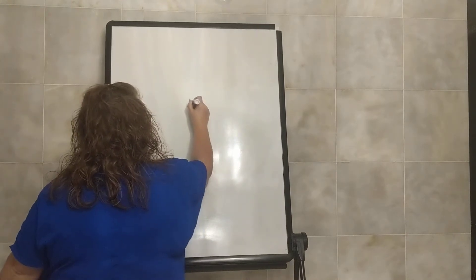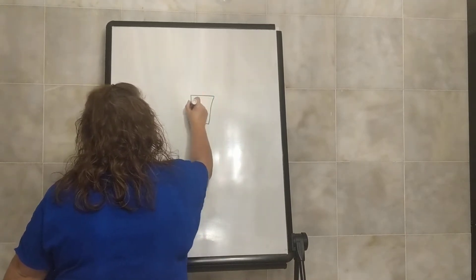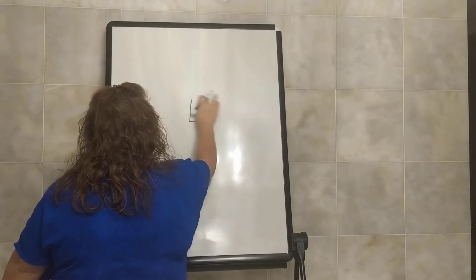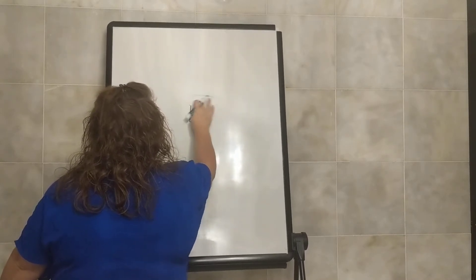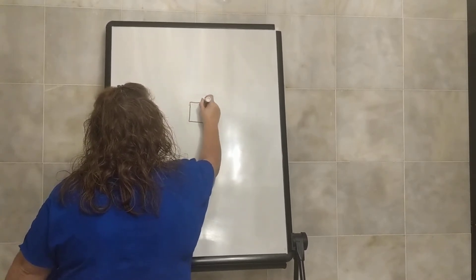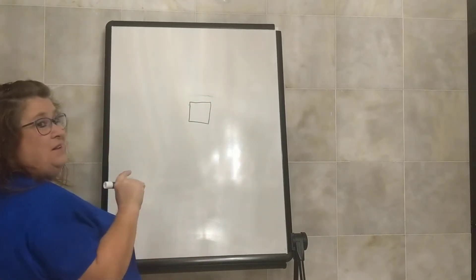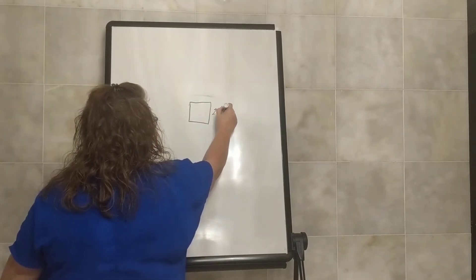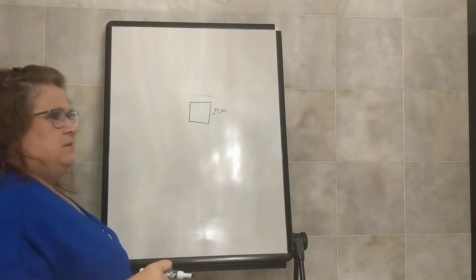So today we are starting our perimeter of a square, which is every bit as easy as the other two. When we find the perimeter of a square, here is our square, and we have two centimeters. So each side is two centimeters.